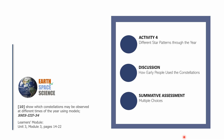Hello and welcome back to the Knowledge Catalog's Earth and Space Science 9 series. This is going to be the 15th session for the series, and it's going to be the last episode. It will be comprised of the following parts: first, activity number 4 on different star patterns through the year; second, a discussion about how early people used the constellations; and the last part is a summative assessment comprised of multiple choices.